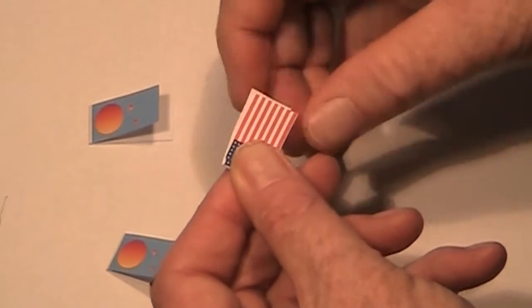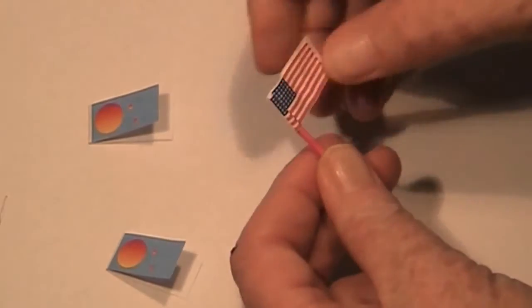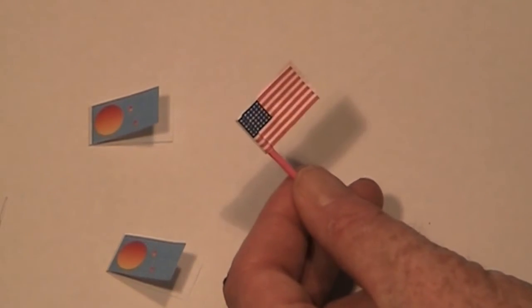Now, you can see here I'm having a little bit of trouble, and you might too, but that's okay. That's why there are extra flags. But, you see, it looks like a flag on a flag post.